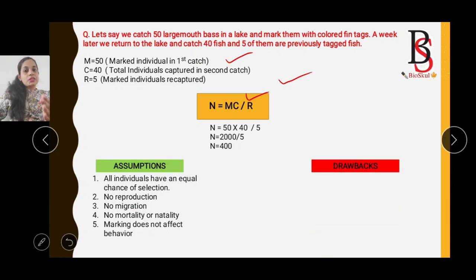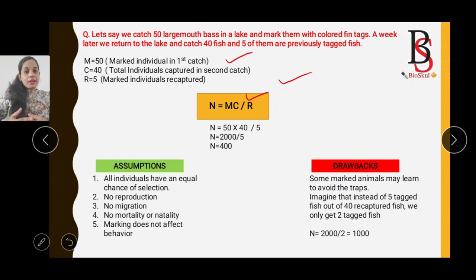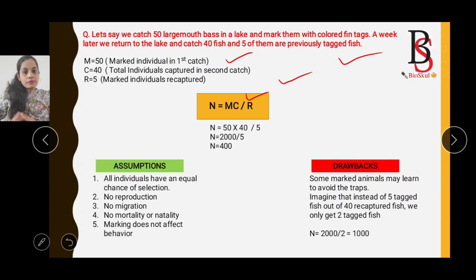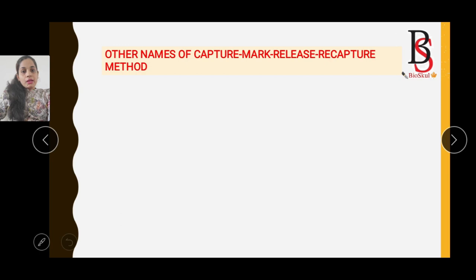The drawback of the Capture Mark Release Recapture method is that some individuals may avoid trapping and cannot be caught a second time. For example, if instead of 5 tagged fish we only recaptured 2, R = 2, and N = (50 × 40) / 2 = 1000 — a greatly inflated estimate. This is the major drawback of this method.